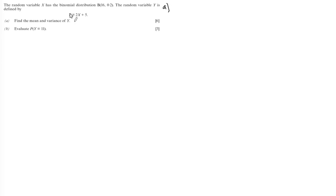Part A. If I wanted to find the expectation of Y, I need to know the expectation of X. So initially, I need to find the expectation of X. Expectation of X for binomial distribution is calculated by doing n times p. So I get 16 times 0.2, which is 3.2.